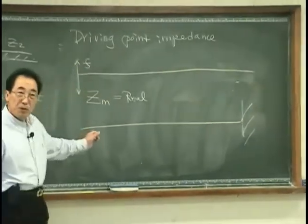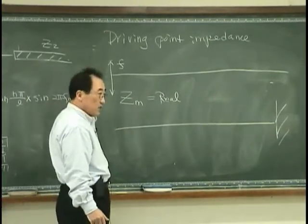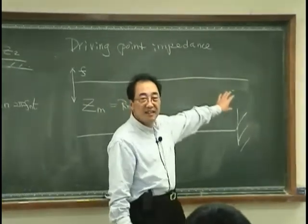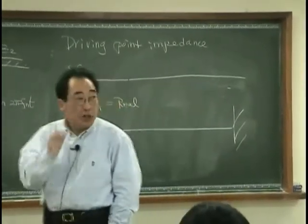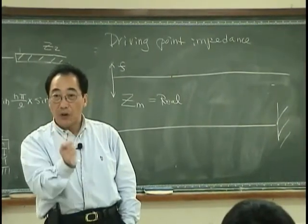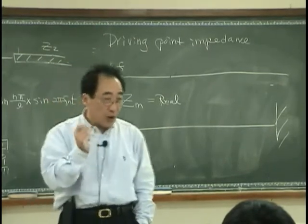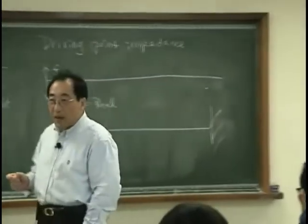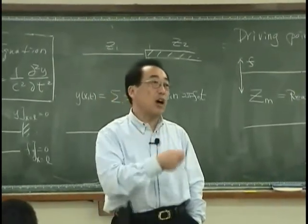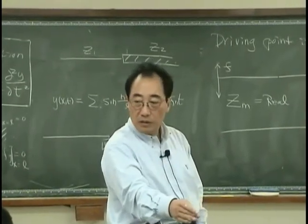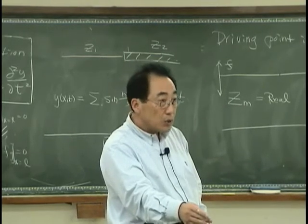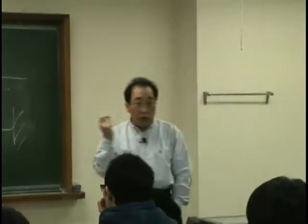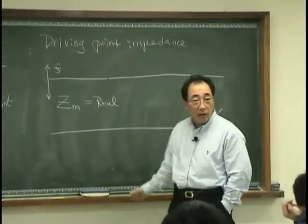So that is another type of impedance. The interesting thing is, the impedance at this point expresses what is happening across the whole dimension. In other words, point information contains what's going on in the entire domain. By measuring driving point impedance, I can describe what is going on in the rest of the system. That is exciting — point measurement, point information, contains everything going on here.